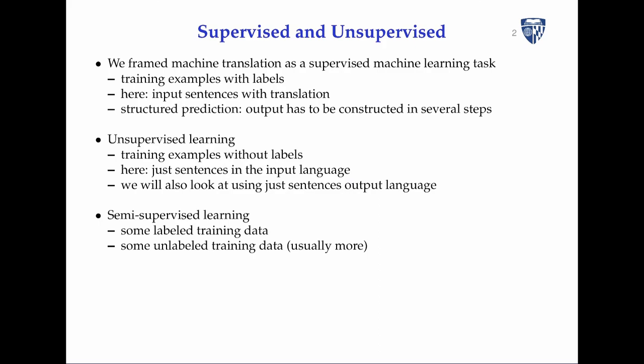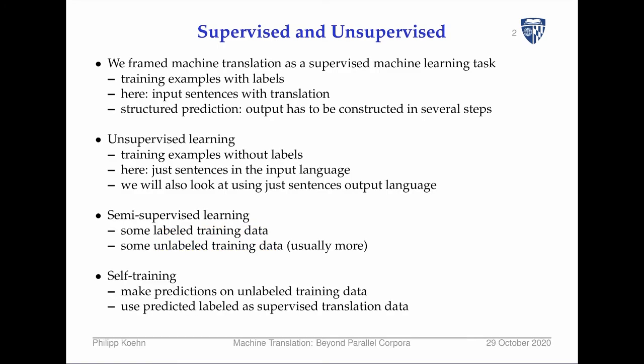Then there's semi-supervised learning, which means you have a mix of the two — some unsupervised data and some supervised data. You have some labeled training data and some unlabeled training data, and usually there's much more unlabeled training data available. There's also self-training, which makes predictions on the unlabeled training data and then uses the predicted label as supervised training data — essentially a way to artificially create training data.